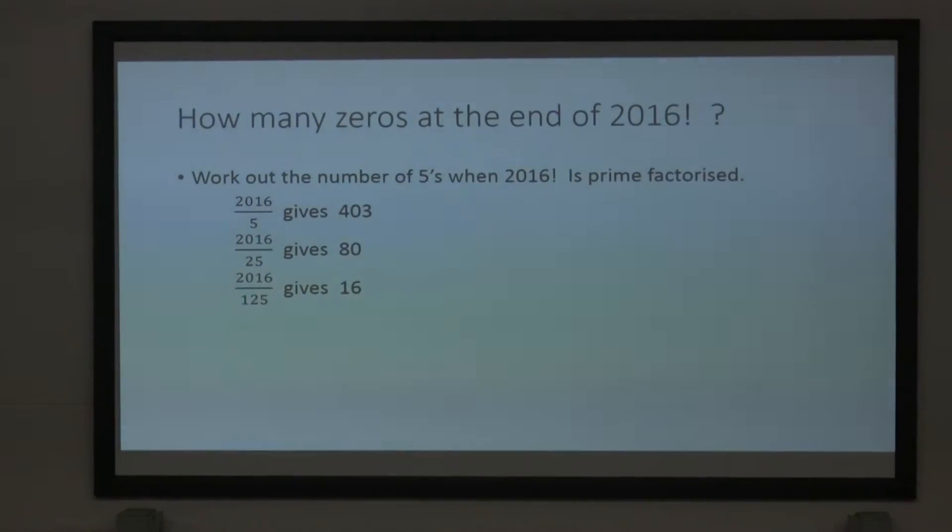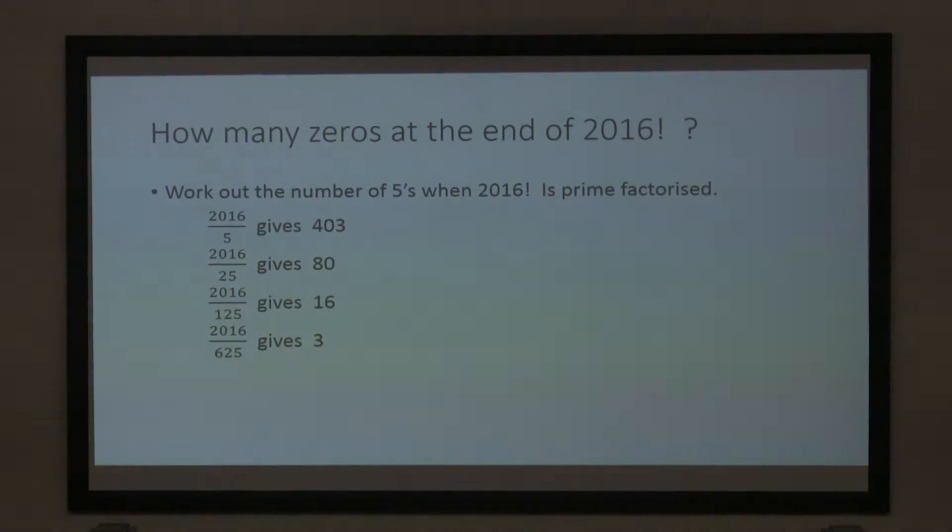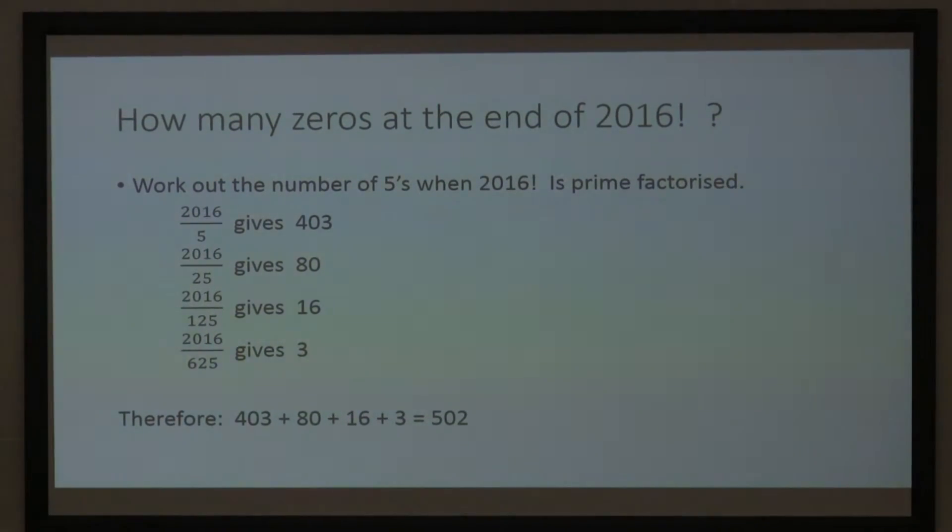And each of those 25s adds one five onto the total. And then, how many 125s are there? There's 16, so they add another 16 onto the total. There should be, I've done it right. And if I haven't, you can edit it. It's 502 zeros at the end of 2016 factorial.